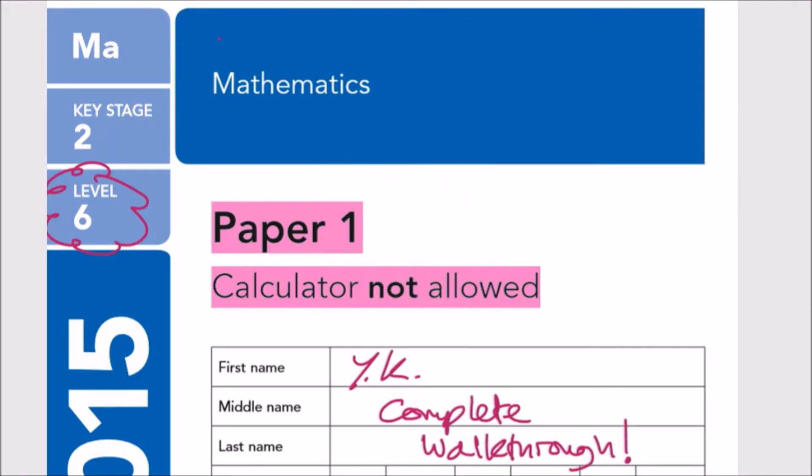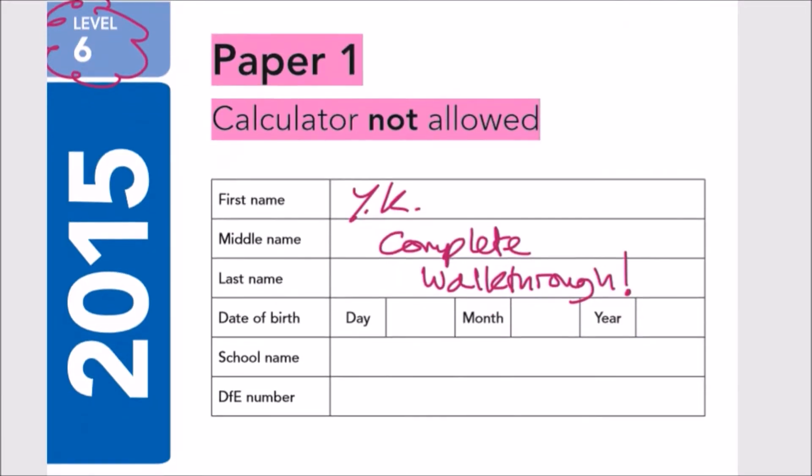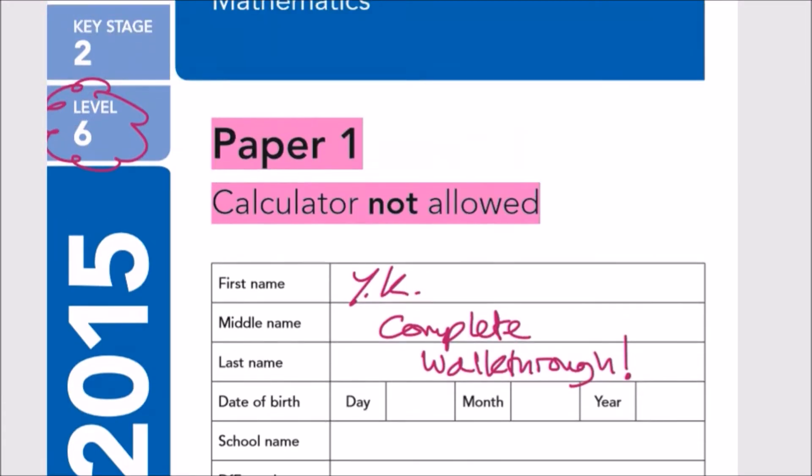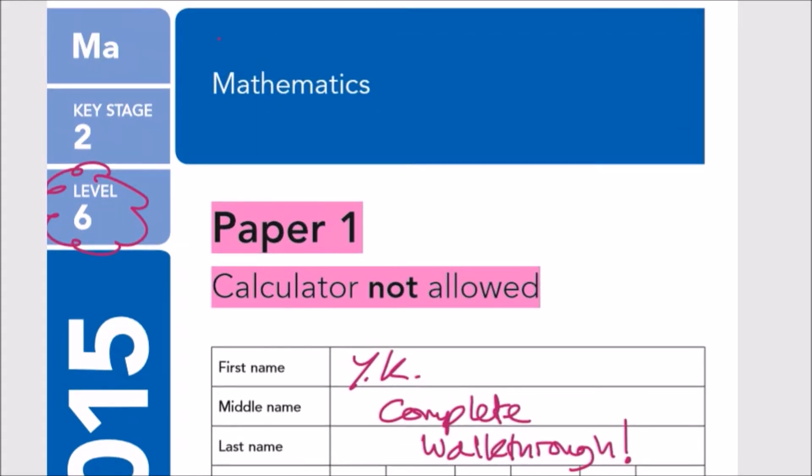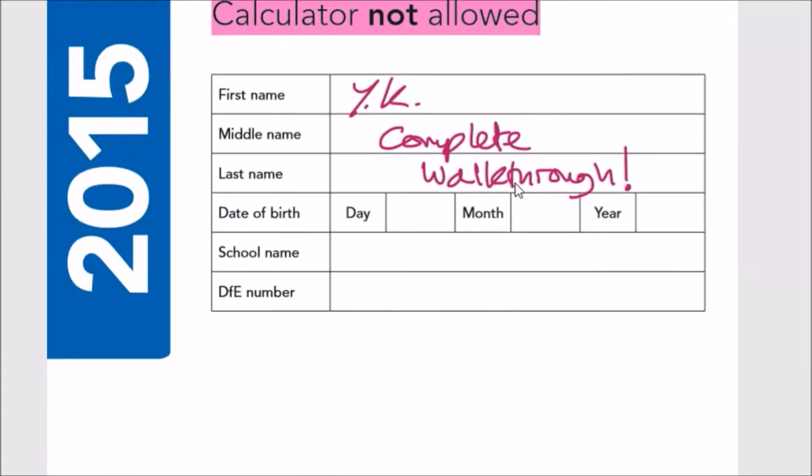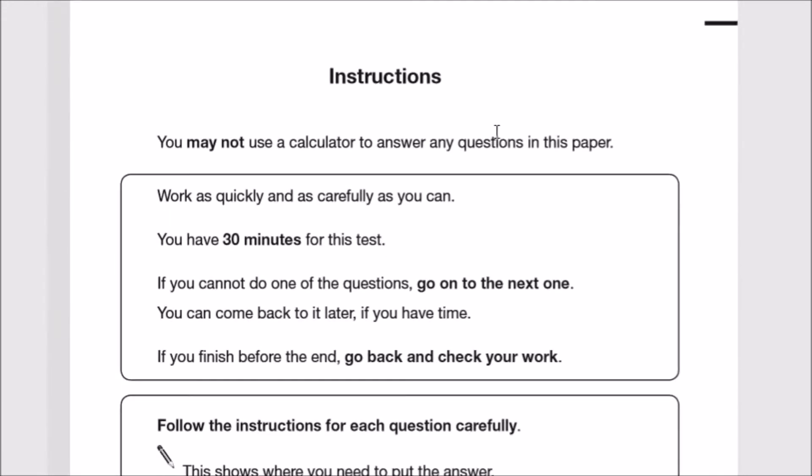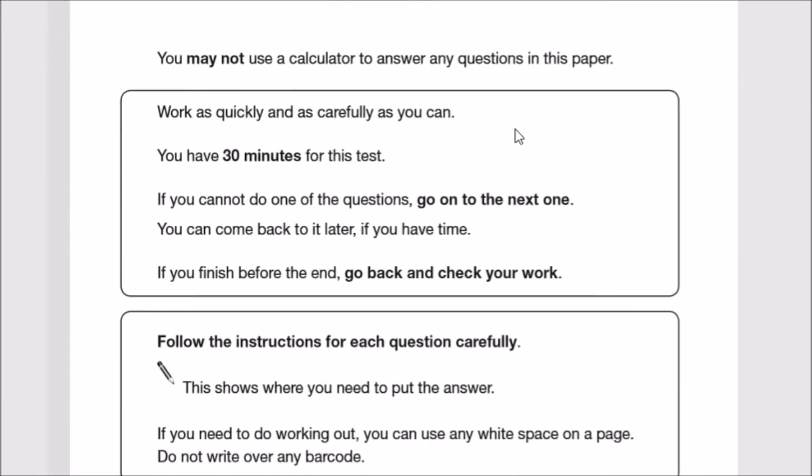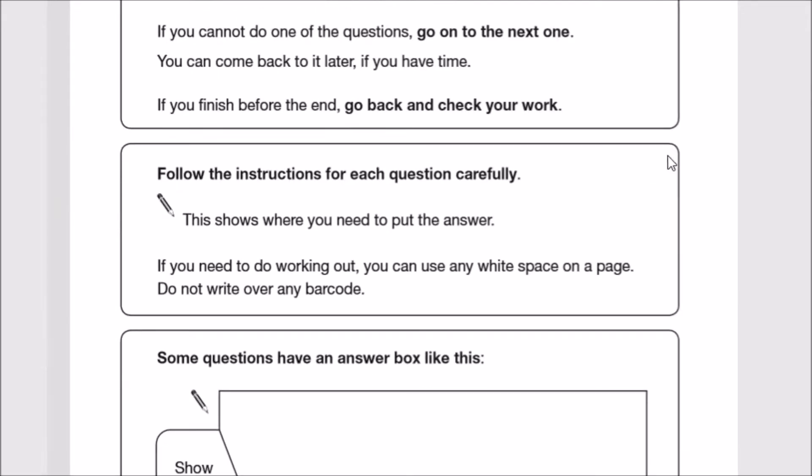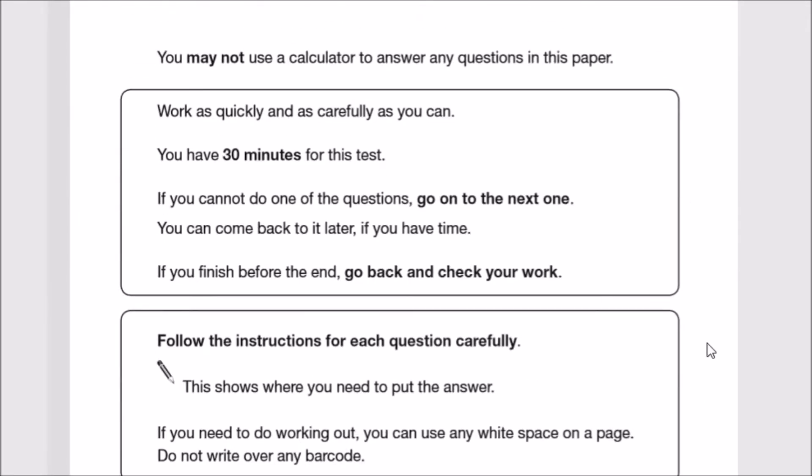Here we go guys, paper one for the level 6 2015 maths. As usual, I'm going to go through a quick rundown and break through this paper. These questions are technically considered harder than level 3 to 5, more in line with year 9 stats or closer to GCSEs. This will be very fast because you usually just need 30 minutes and most can do this in 15 to 20.